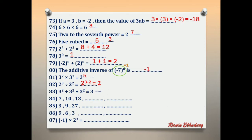Number 83: 3 power 2 + 3 power 2 + 3 power 2 equals 3 power what? Change the plus sign to multiply. We have 3 power 2 repeated 3 times, so write 3 power 2 × 3. Same base, add powers: 2 + 1 = 3. The answer is 3 power 3.